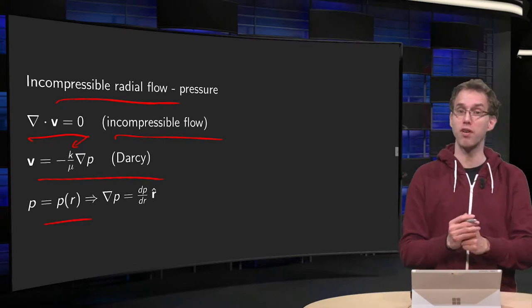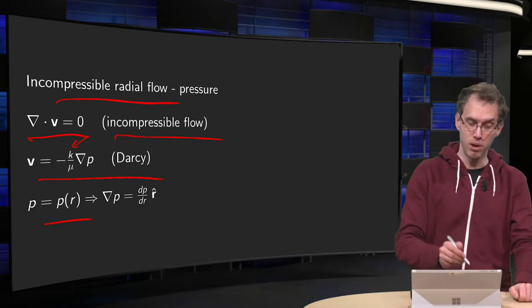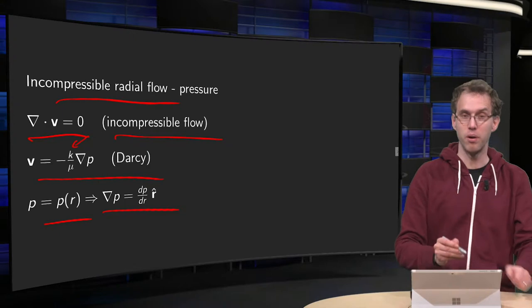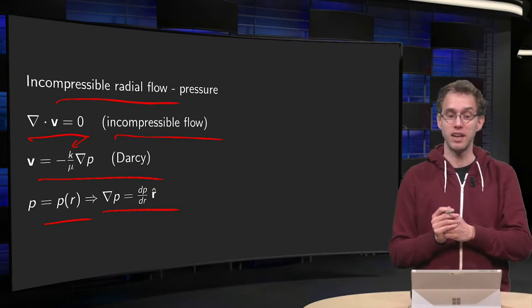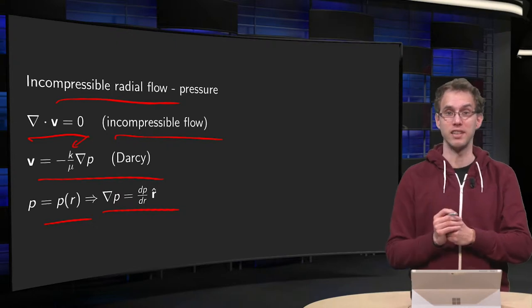So p is p as a function of r. That means that our gradient of v only has a component in the r-hat direction, so gradient of v equals dp dr in the r-hat direction.